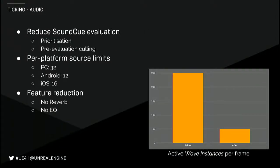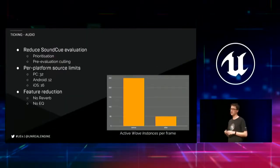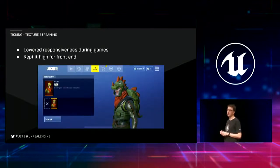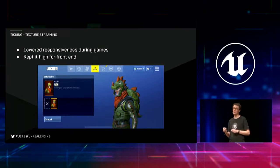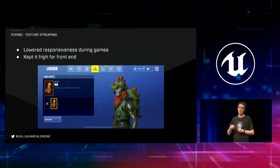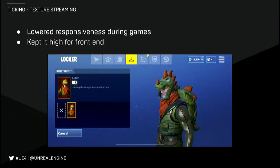Audio is another big part of the game and has to do some work. Most of this is done off the game thread, but we still have to process what we call sound cues — our sound graphs where we can apply effects. Previously we would evaluate those even if the eventual sound might not be played. We added a prioritization system to cull them first — going from over 200 sound instances being processed each frame to about 50, which is a big saving. We also limit the number of audio sources on different platforms: on PC it's about 32, and on Android and iOS it's around 12 to 16. Things like reverb and EQ can be platform specific. On mobile we can also reduce how responsive the texture streaming is, while keeping it responsive in the front end so that when you're swapping cosmetics in the shop, textures come in nice and quickly.